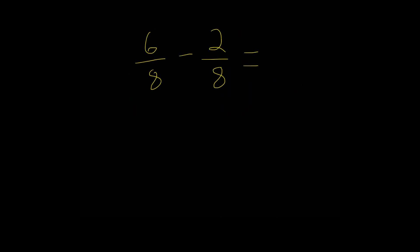All right, so now we have the problem 6 eighths minus 2 eighths. And remember, because our two denominators here are the same, we're simply going to put that to our difference.